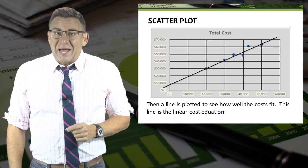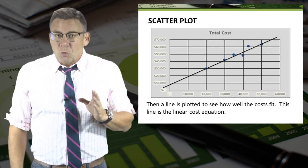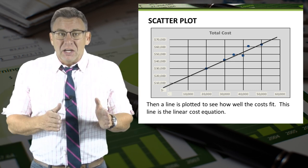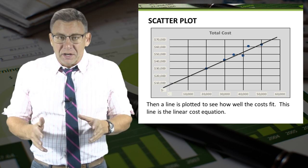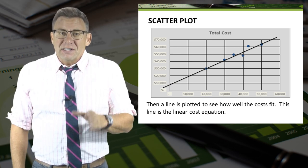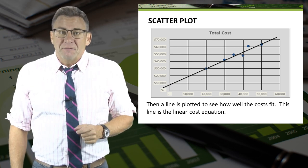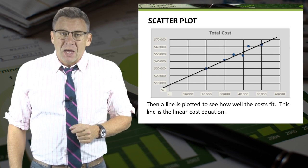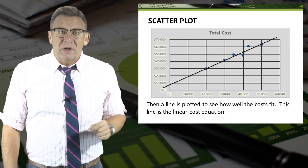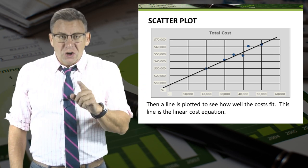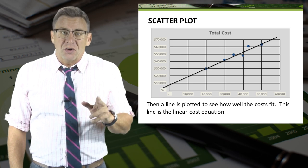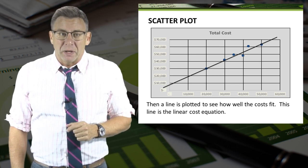Note that where the line crosses the y-axis — meaning where the miles driven are zero — this is the amount of fixed costs. But it's not really clear where that number is, so it's a good thing we have ways of predicting costs other than with a scatter plot.